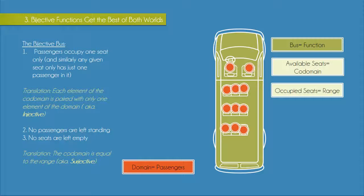Firstly, passengers can occupy only one seat, so nobody can take two seats to themselves. Similarly, you can't have two small children sharing one seat. This is equivalent to saying that each element of the codomain is paired with only one element of the domain. In other words, the assigning of seats is injective.